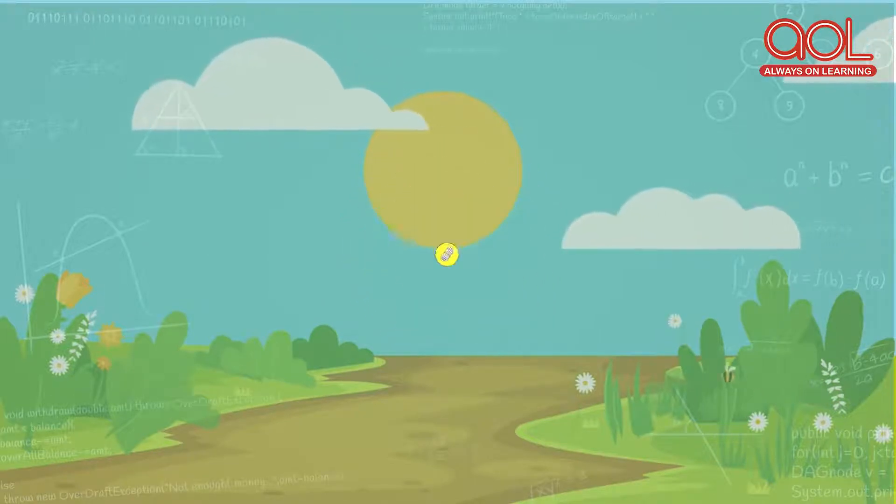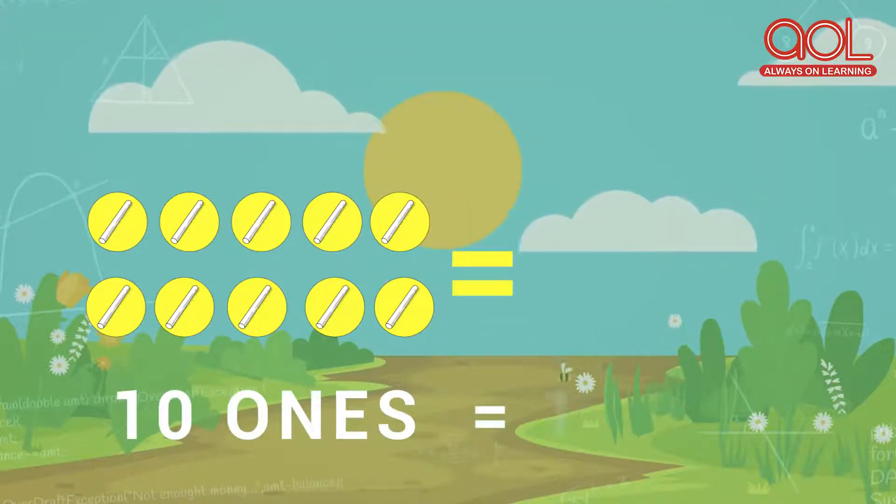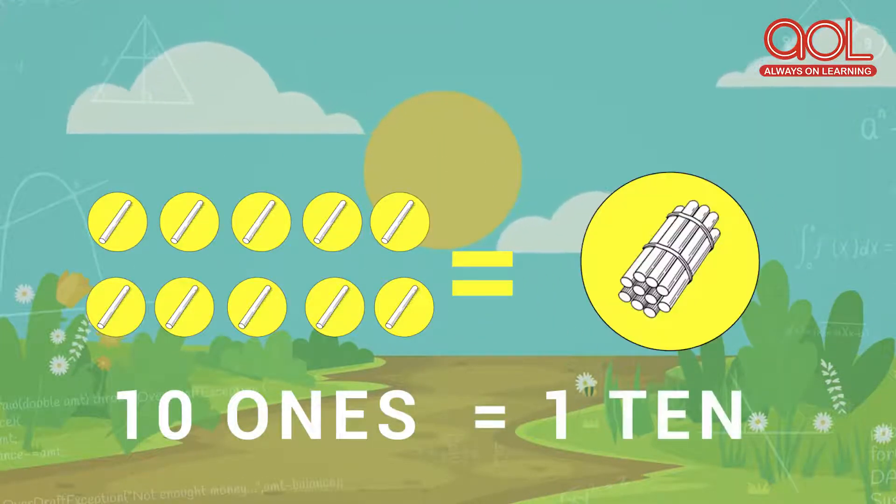So ten ones is equal to one ten. So children, this is a place value house. Let's build numbers with the help of the place value house.